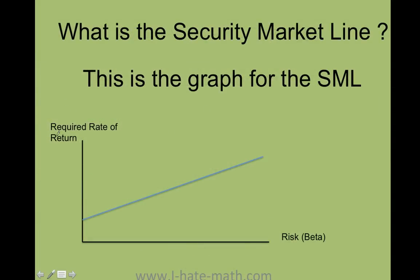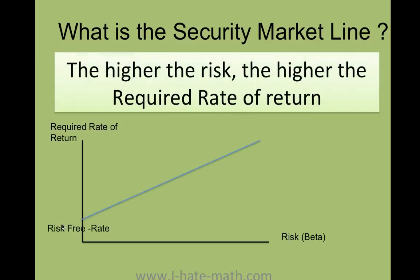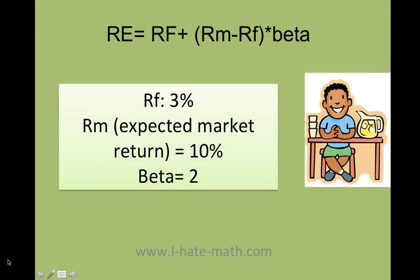On the security market line, the y-axis shows the required rate of return and the x-axis shows beta, which represents risk. The more you move along the x-axis, the higher the beta and the more risk, resulting in a higher return. The risk-free rate appears at the y-intercept, where beta equals zero — meaning you have literally no risk.